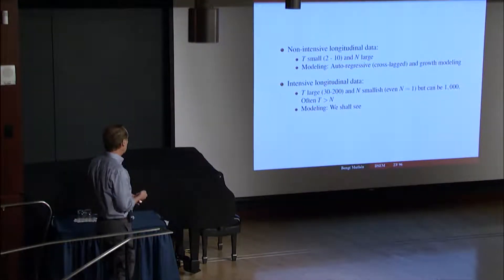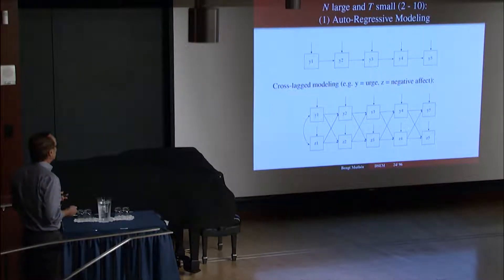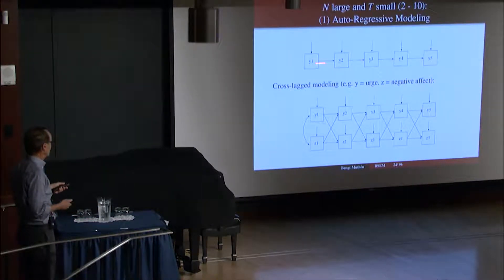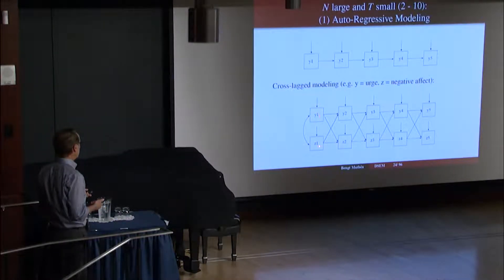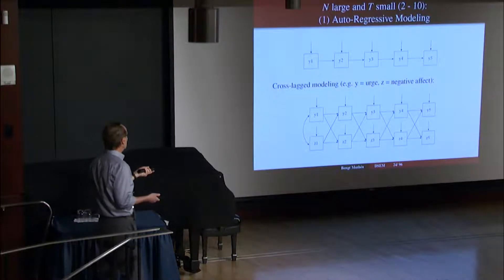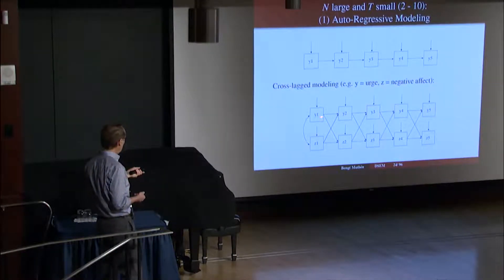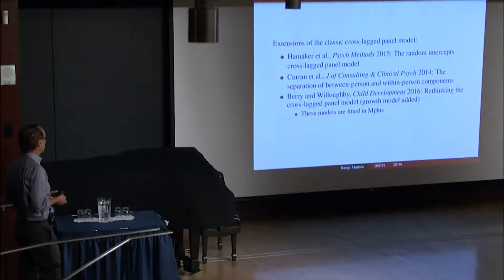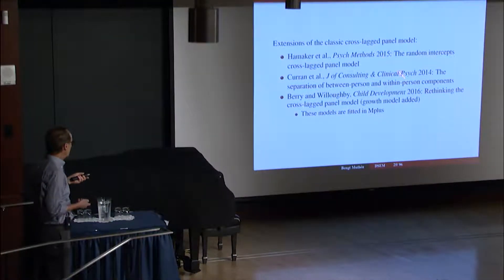The modeling—you have already seen through what Ellen talked about. One common method is the autoregressive modeling that Ellen discussed: Y2 is influenced by Y1, Y3 by Y2. This is the lag-one autoregressive for one variable, and then cross-lag modeling for two variables like smoking urge and negative affect. Does negative affect or irritations at time one influence smoking urge at time two, for instance? Is there a reverse relationship on top of the autoregressive relationships for the same variable? Here are some references for that, quite new and interesting by somebody called Hamaker and others in the Journal of Consulting and Clinical Psychology and in Child Development. All of them use Mplus, so you'll feel familiar when you read those.